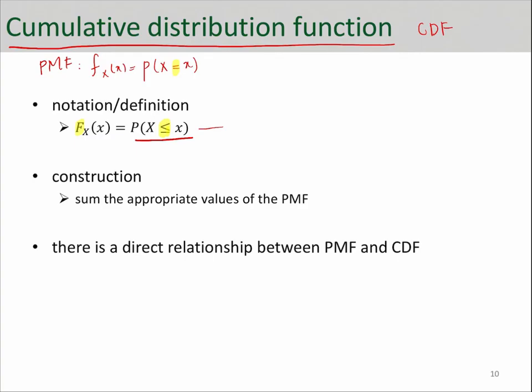For example, probability of X less than or equal to 5—this is CDF—which can be calculated by adding up a bunch of PMFs: probability of X equals 0 plus probability of X equals 1, all the way to probability of X equals 5. And each of these can be found from a PMF function.